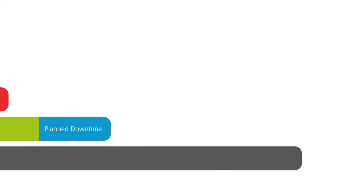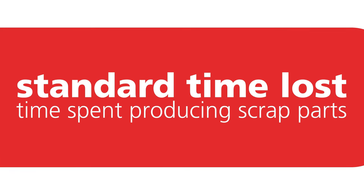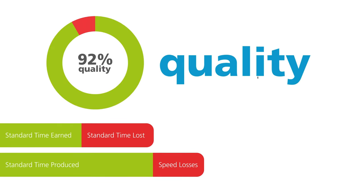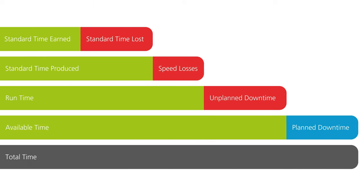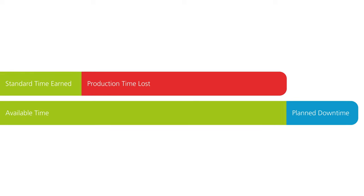The last factor we need to consider is the quality rate. Any time spent making scrap parts is known as our standard time lost. We subtract this from our standard time produced to leave us with our standard time earned. The ratio of standard time earned to standard time produced gives us our quality score. This is the proportion of your machine's available operating time that is usefully used, and can be used to directly work out your OEE.